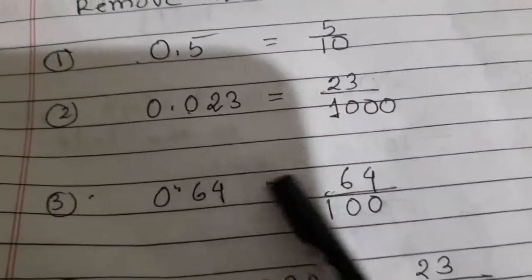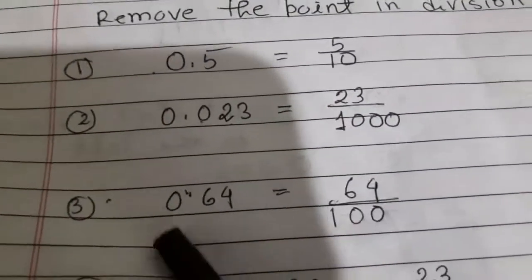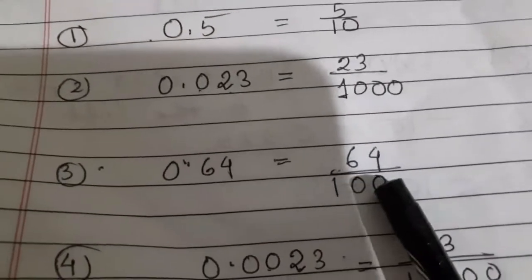Similarly, 0.64. 64 here. After the point, two digits. Therefore one, two zeros.